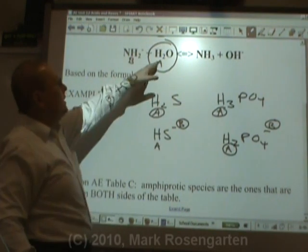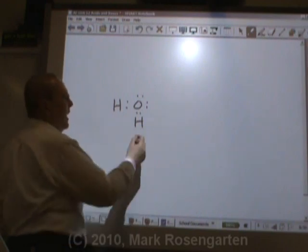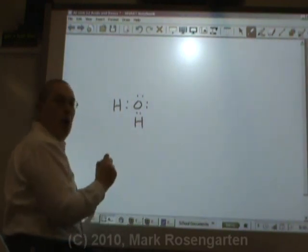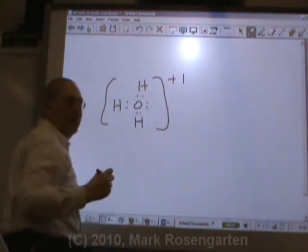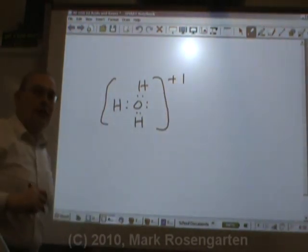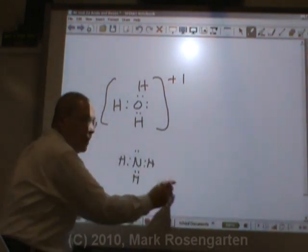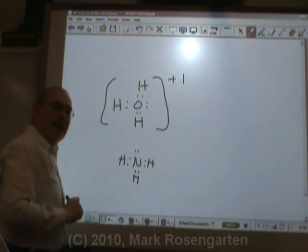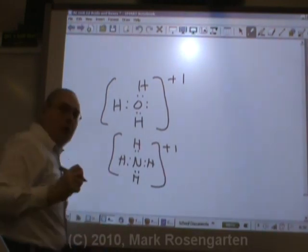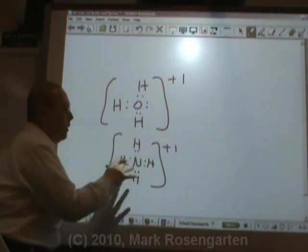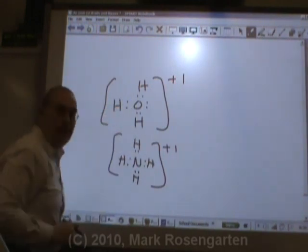We've already seen how water can be amphiprotic. The reason water can be amphiprotic is it can either lose a hydrogen or pick up another hydrogen through coordinate covalent bonding. The other molecule that does this is ammonia. NH3 can act as an acid if it loses a hydrogen, or as a base if it picks up a hydrogen to form a coordinate covalent bond. So water and ammonia can also be amphiprotic even though they don't have a negative charge.